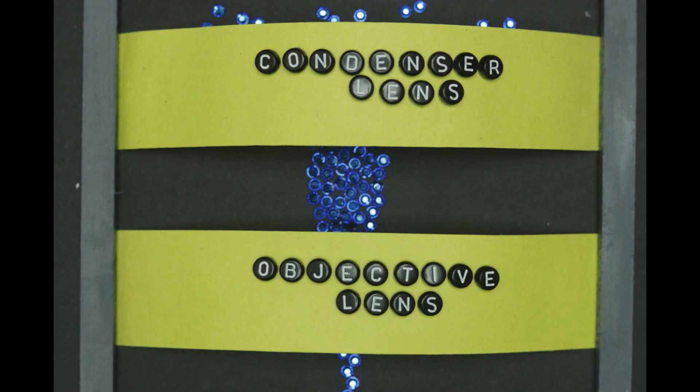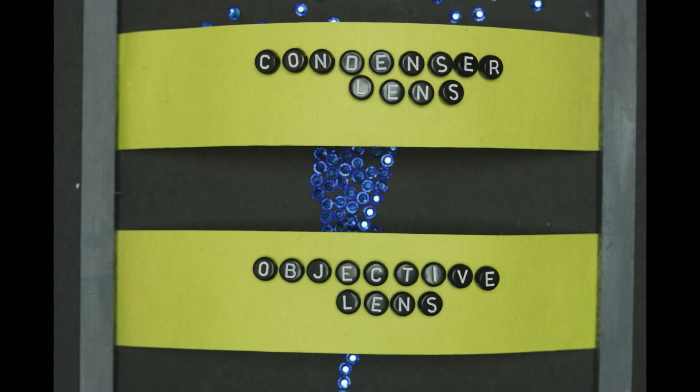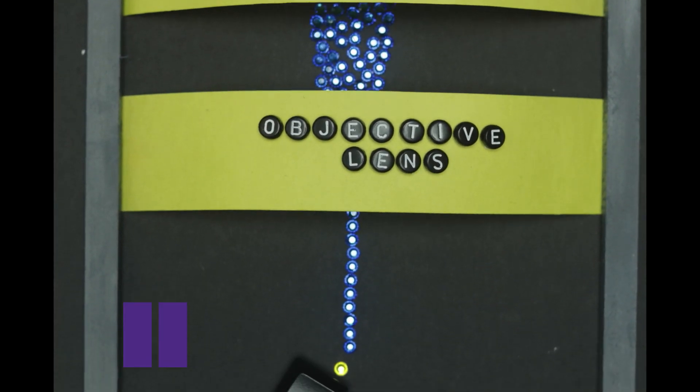The specimen chamber houses the sample that you want to view and the electron beam passes through the objective lens to hit the sample.